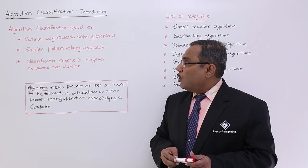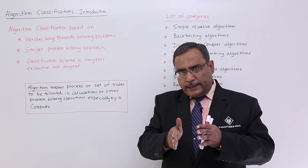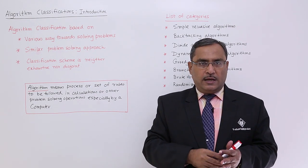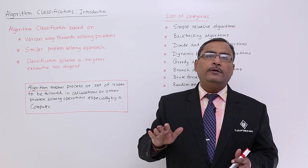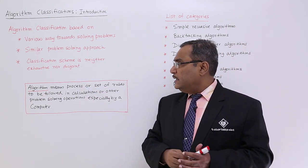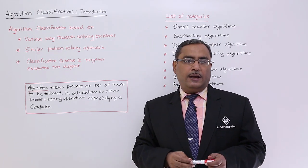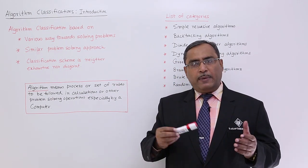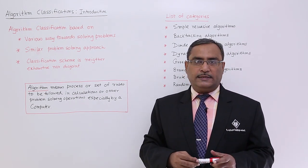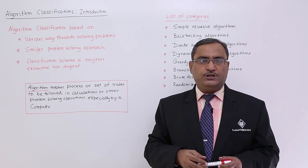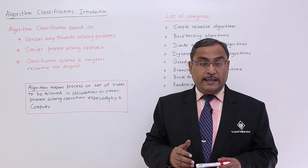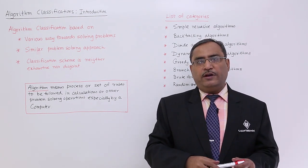Similar problem solving approach - whenever some problems are getting solved with a similar approach, we take that as one classification. If the approach is differing, those algorithms will go to another classification. Classification scheme is neither exhaustive nor disjoint, so they might have some approach which is overlapping. But depending upon the way in which we are attacking one problem towards the solution, that will decide what classification we are dealing with.